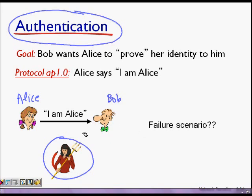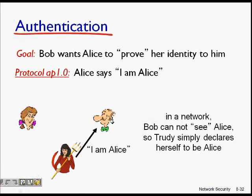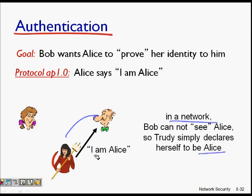The first protocol is very simple — Alice just declares 'I'm Alice' over the channel. The failure scenario here is that a man-in-the-middle, Trudy, can also say 'I'm Alice' and talk to Bob while faking to be Alice. Since Bob cannot see Alice on the network, Trudy simply declares herself to be Alice, and Bob will then reveal all the secrets.